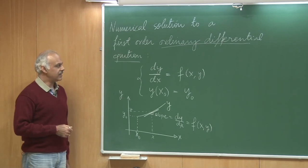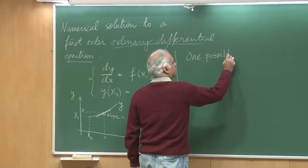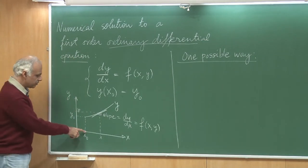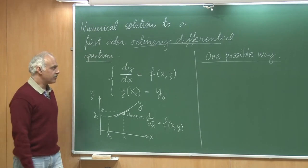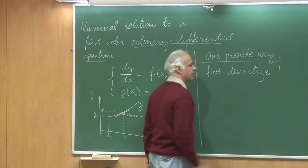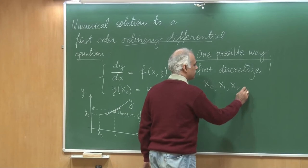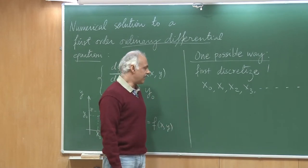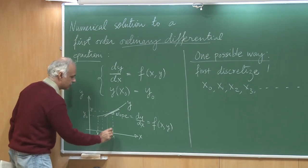There are many ways of doing it. The first approximation that we will make is that instead of getting a solution at all values of x, we are going to be talking about getting solutions at some discrete values of x. We will first discretize — we will say that we are interested in the function at x₀, x₁, x₂, x₃ and so on. For example, this could be x₁, this could be x₂, and so on.